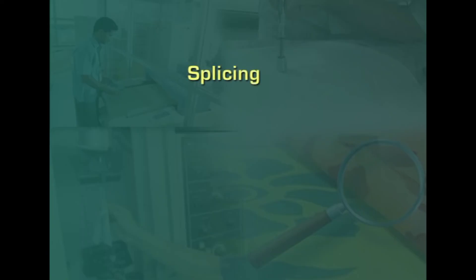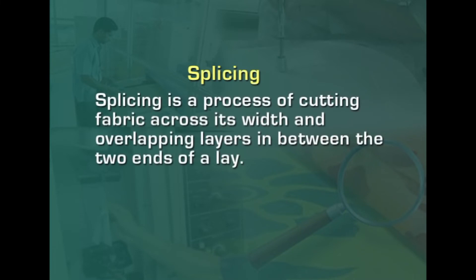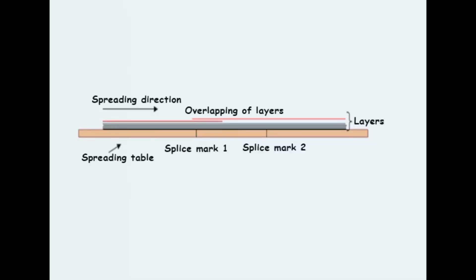Splicing is a process of cutting fabric across its width and overlapping layers in between the two ends of a lay. Splicing of a lay is required sometimes to avoid faults found in fabric from entering garment components. After splicing, the cut end is pulled back to overlap plies as far back as the next splicing mark. Overlapping length depends on the splicing mark to cover complete garment components. Splicing is also used when one fabric roll ends in the middle of the marker and the end bit length is enough to cover at least one complete garment component. Spreading of the next roll starts from the splice mark.